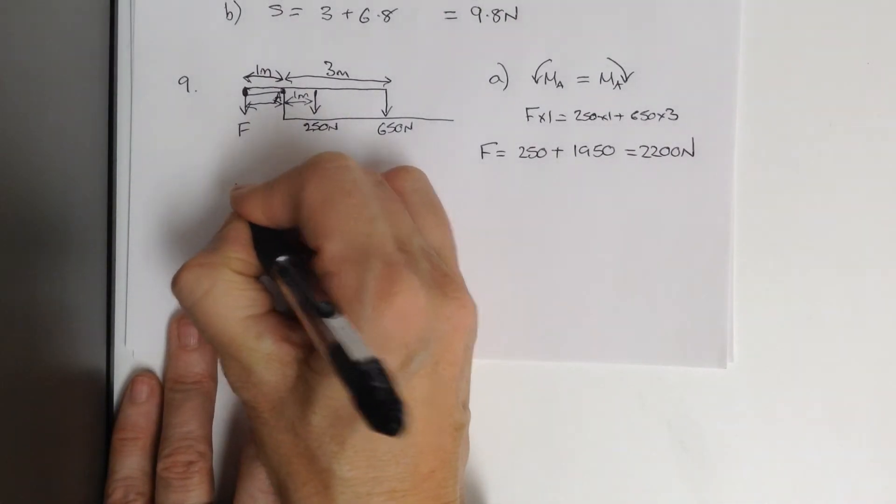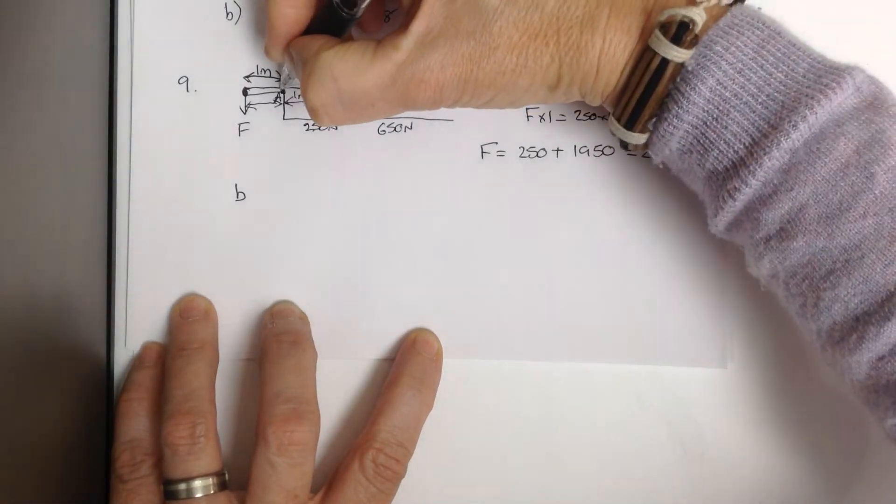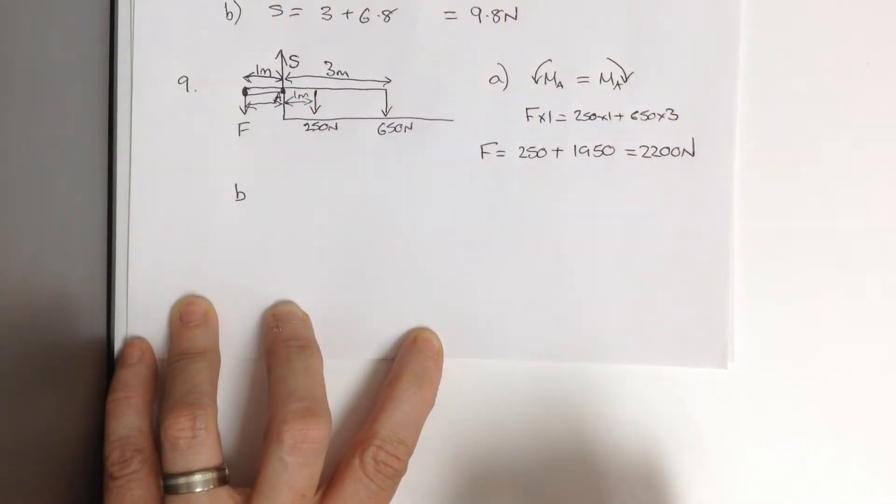So, part B says, what is the force on the edge of the swimming pool? So, basically, the support force S, pushing up here.